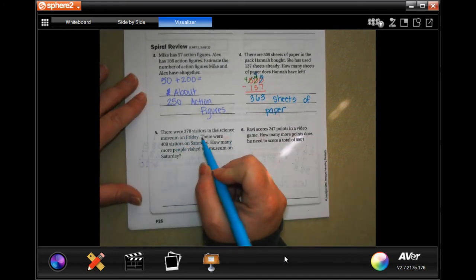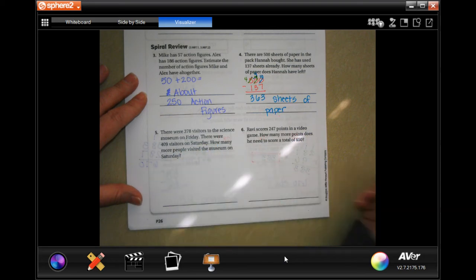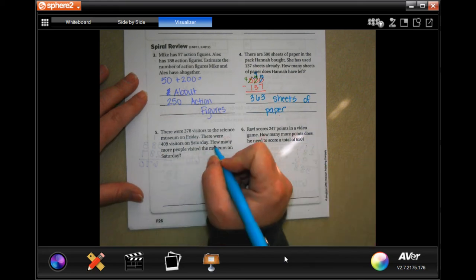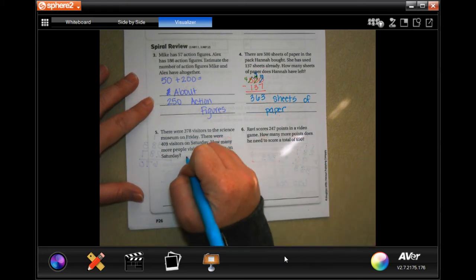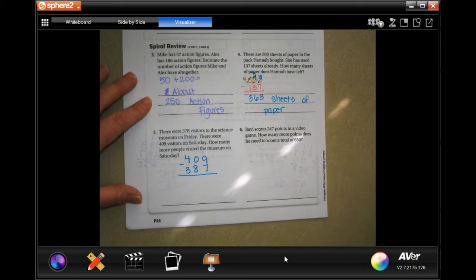There were 370 visitors to the Science Museum on Friday. There were 409 visitors on Saturday. How many more people visited the museum on Saturday? So, 409, 387, and they want to know the difference. Let's do it.